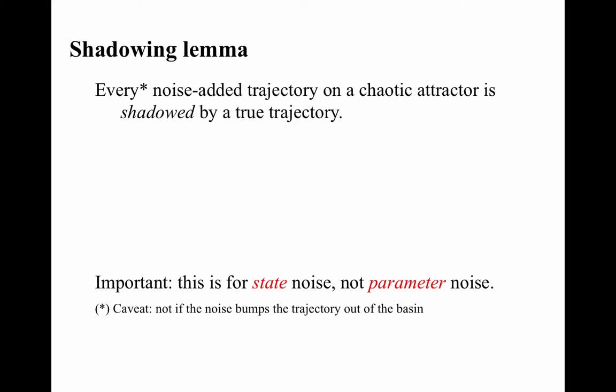So the answer to my earlier rhetorical questions is that ODE solvers produce points on the attractor, but maybe not in the right order, because at every step the trajectory gets bounced around by all those little errors. The shadowing lemma saves us by saying that those small changes don't bounce you off the attractor, although if they're a little bigger there may be some transient to die out, and if they're really big they can bounce you out of the basin of attraction. But even if they're small enough not to bump you off the attractor, they do mess up the time base.